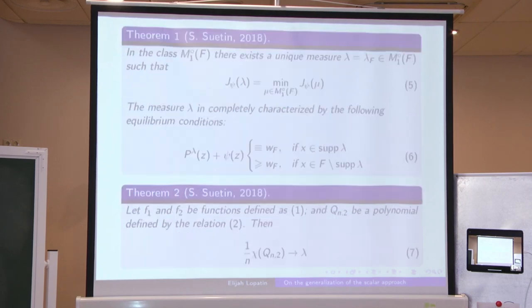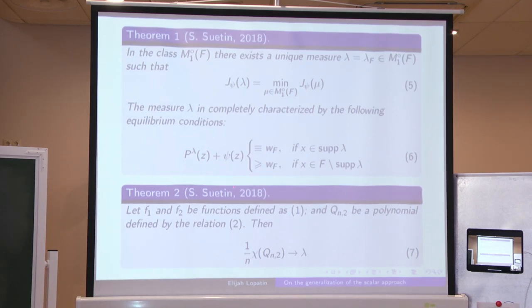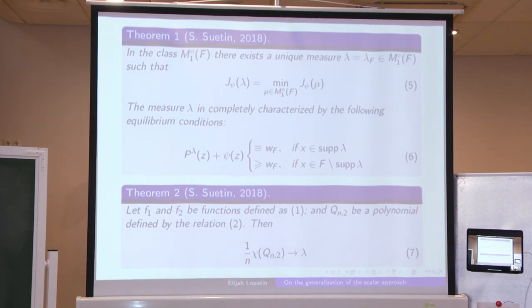We now know that this is in fact an equilibrium potential problem with exterior harmonic field on the Riemann sphere, and via the Zhukovsky transform we can introduce a global coordinate and consider it as a planar scalar potential problem. I would like to consider a slightly wider class of functions, which gives us an opportunity to construct a scalar potential problem really on a Riemann surface of positive genus.